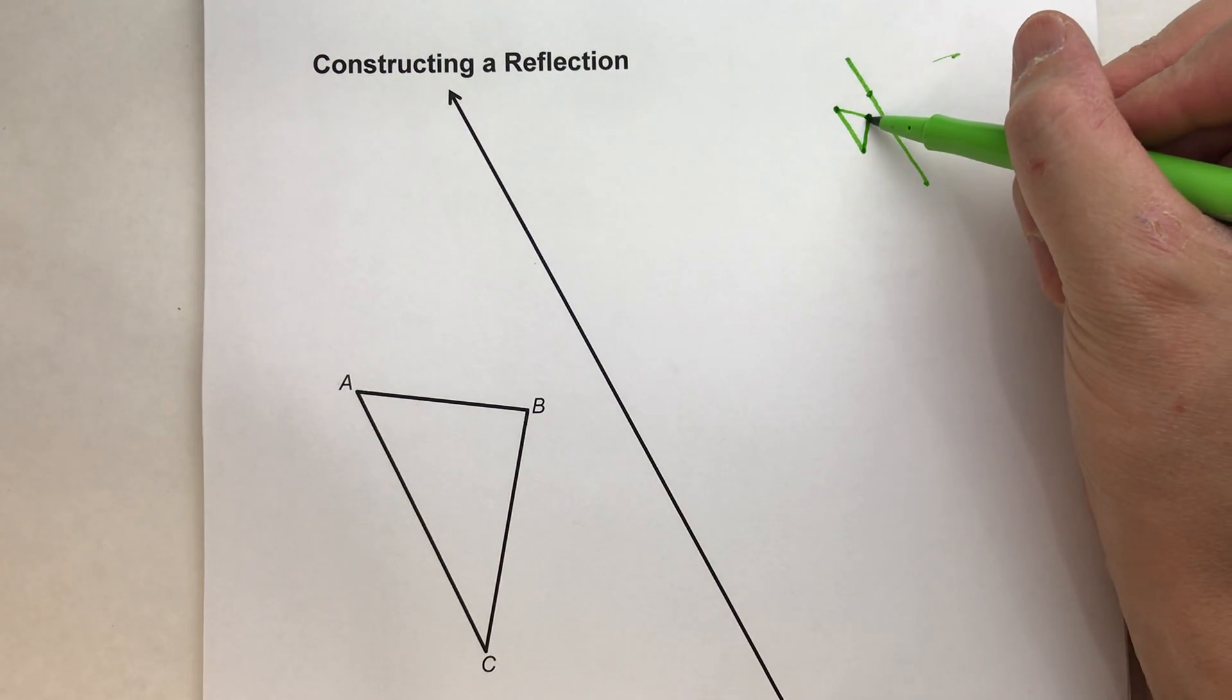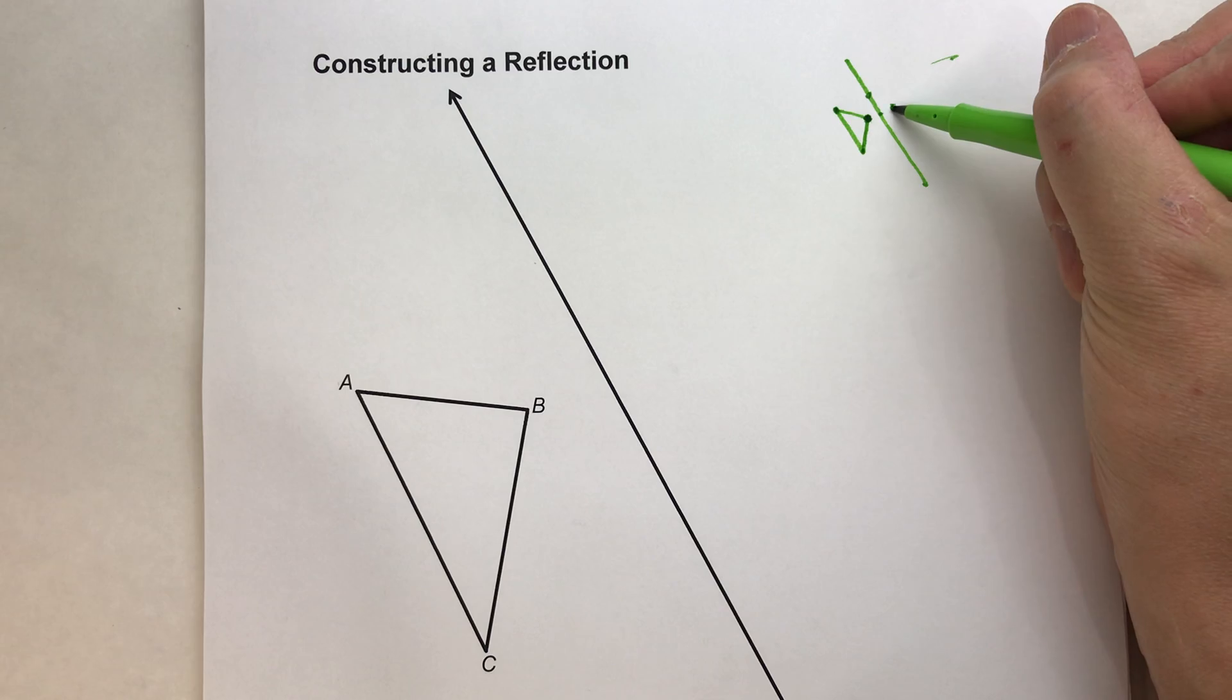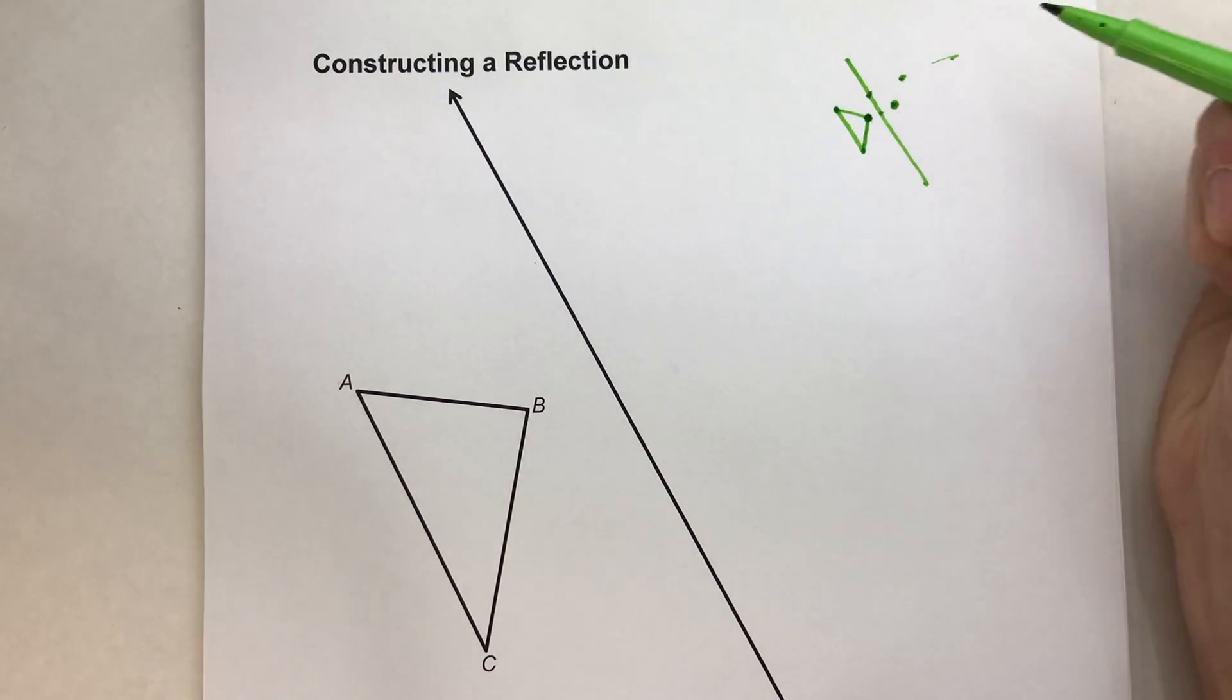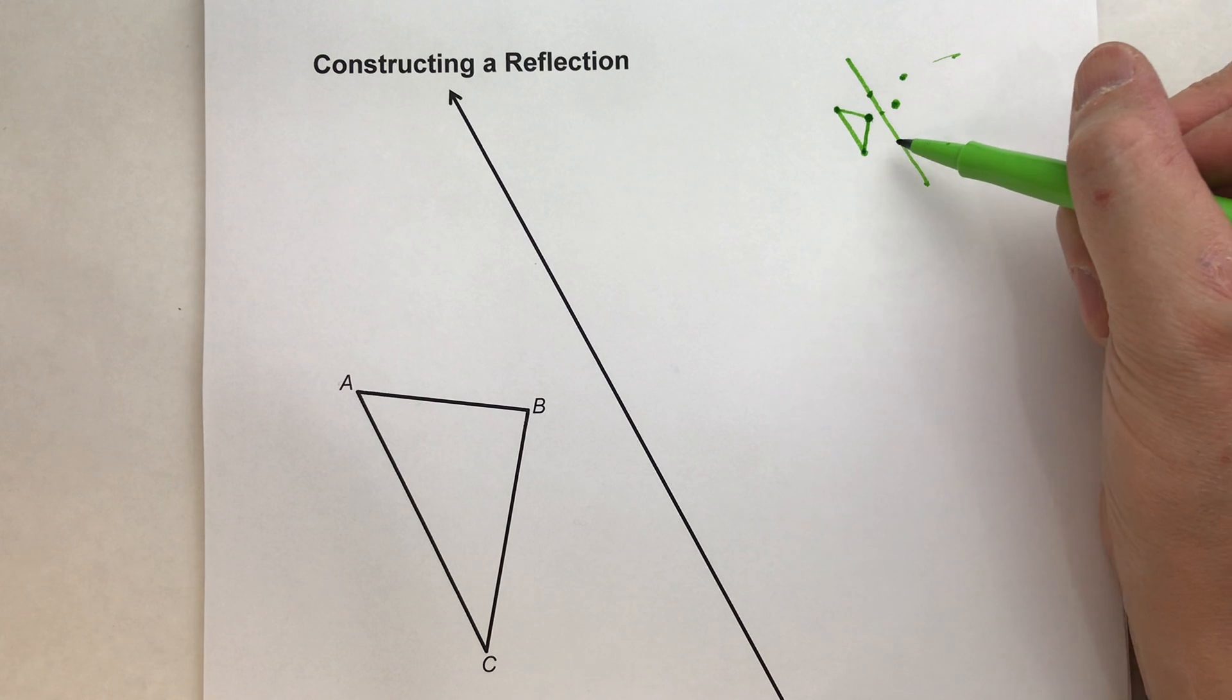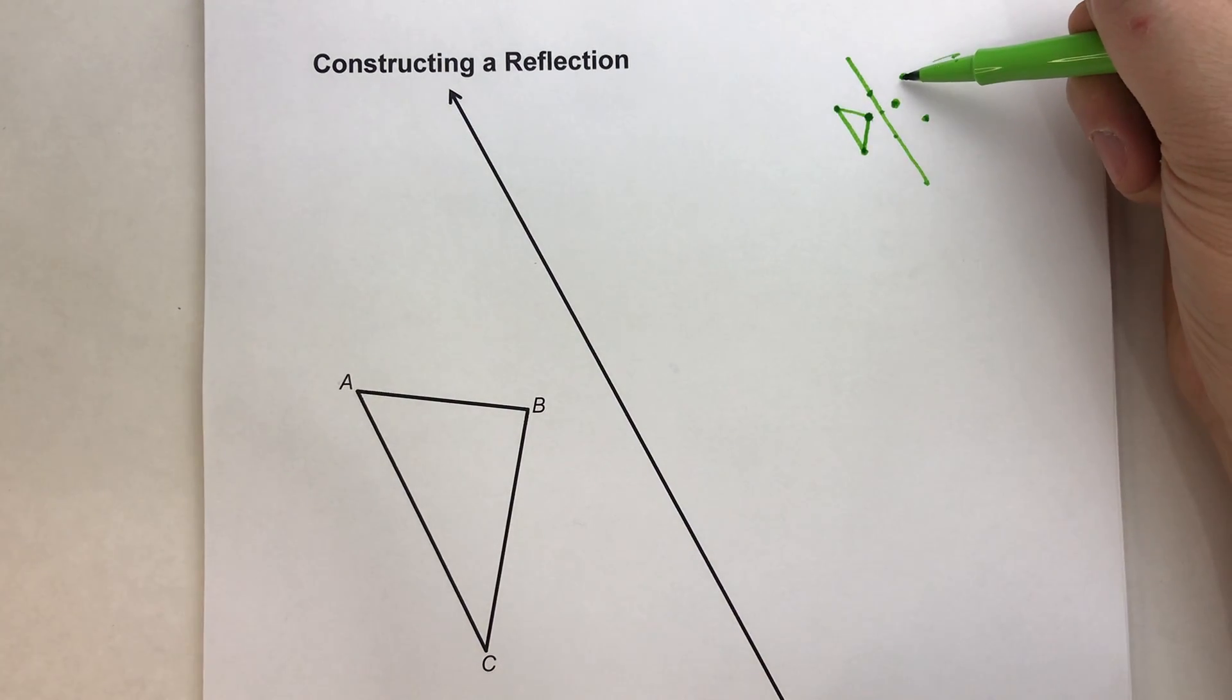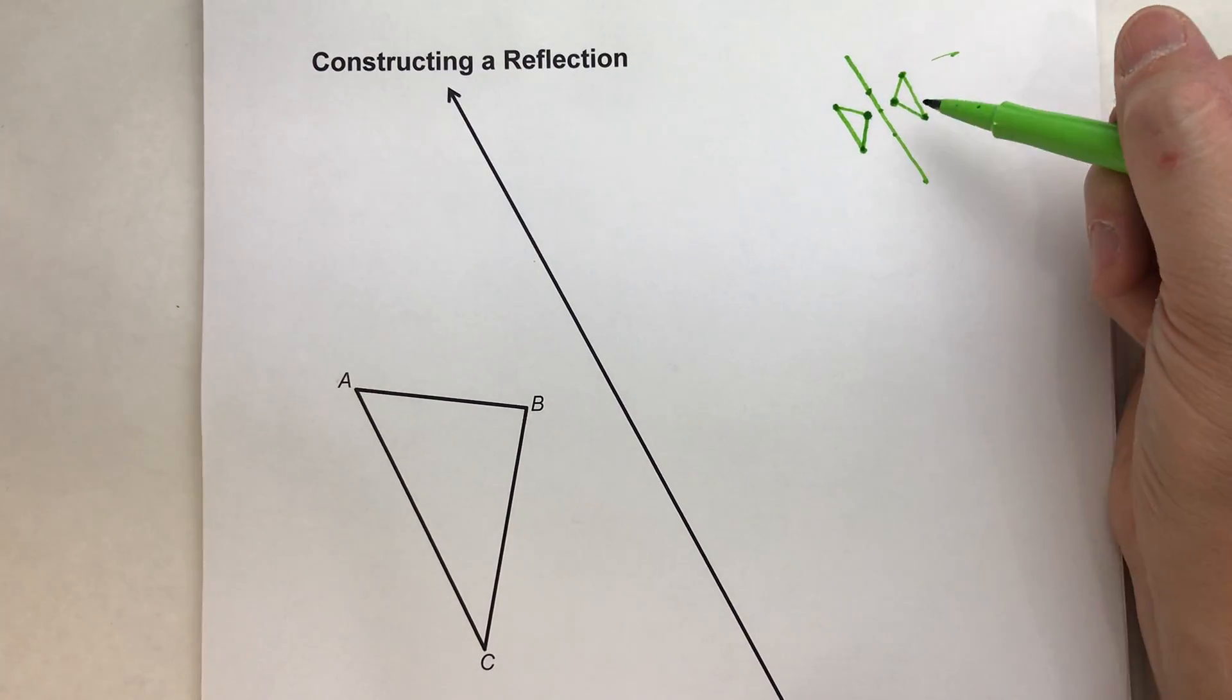For example, this point right here is going to reflect directly across on the other side right there. Same with this one, directly across on the other side there, and same with this point. The same distance but on the other side. And once we connect them up, we will have our reflected image.